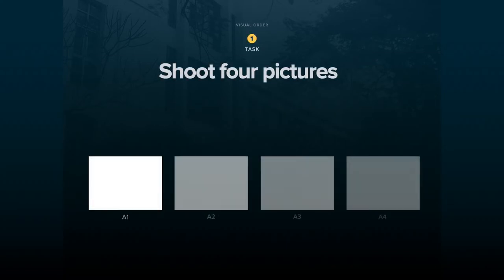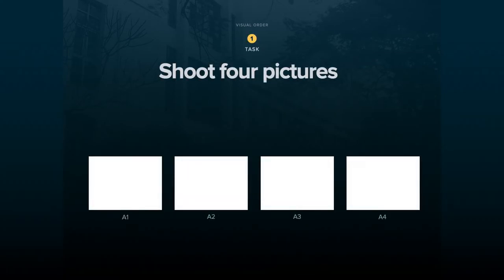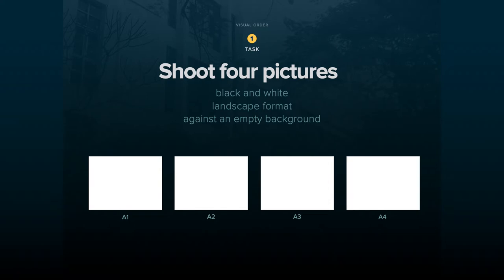In task one, we shoot four pictures of the chosen person. There are certain rules to be followed. All pictures should be shot in black and white, in a landscape format and against an empty background. The pictures should reflect incremental interest.